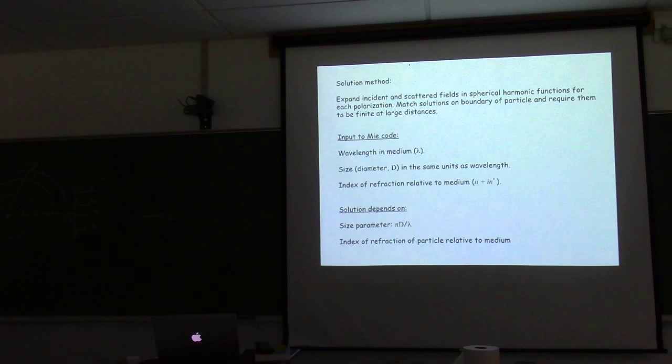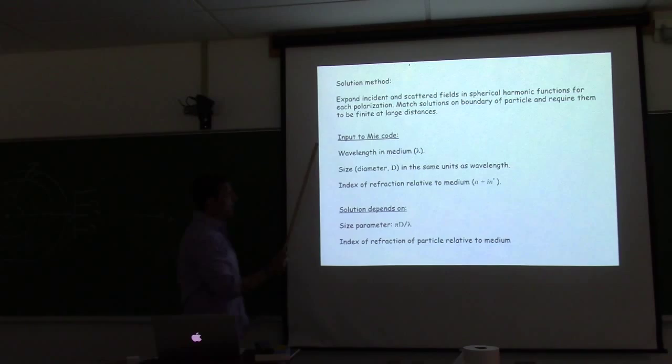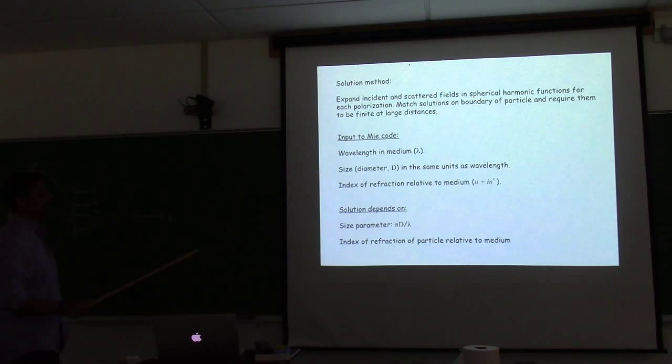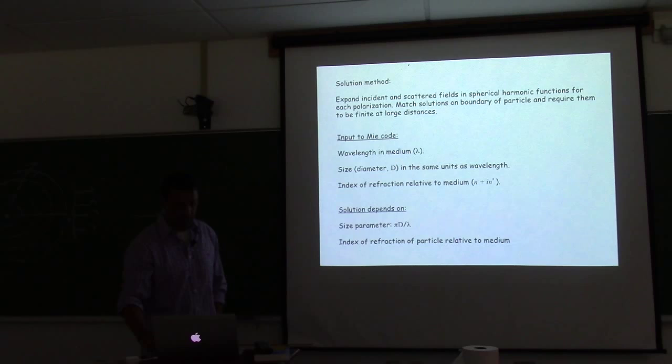The solution method — going pretty fast here — is to expand the incident and scattered light field into spherical harmonic functions for each polarization, match the solution at the boundary of the particle, and require them to be finite at large distances; they cannot explode at infinity. The input you need is the wavelength in the medium. Let's spend a little time talking about that and how we calculate the wavelength in the medium.